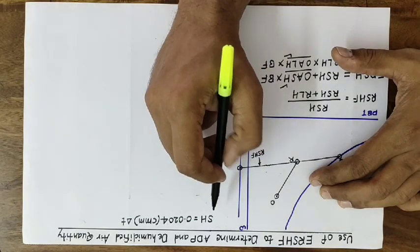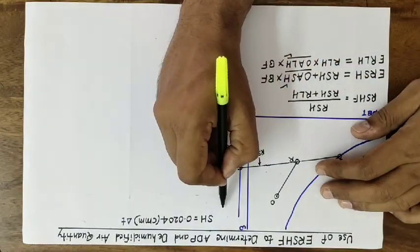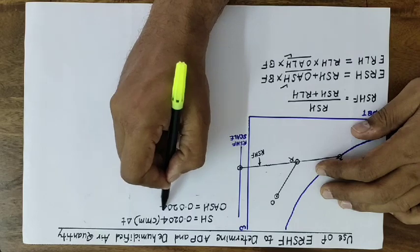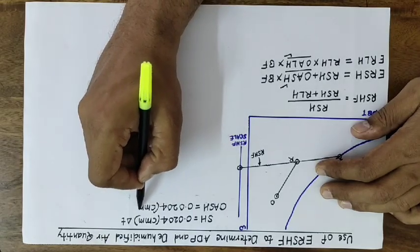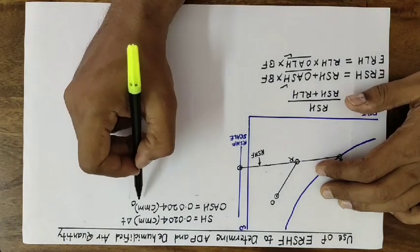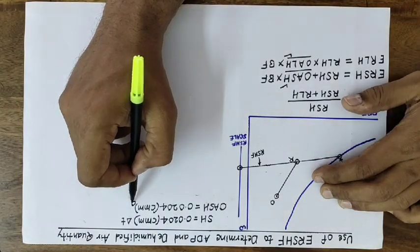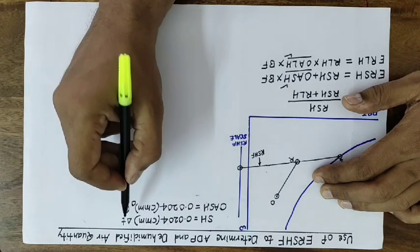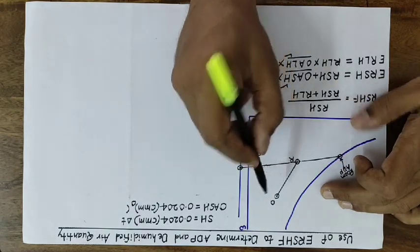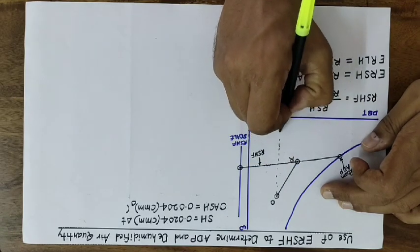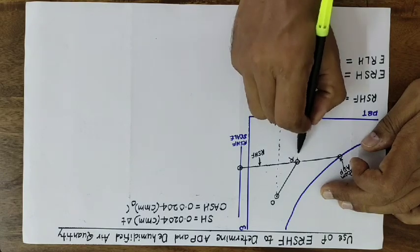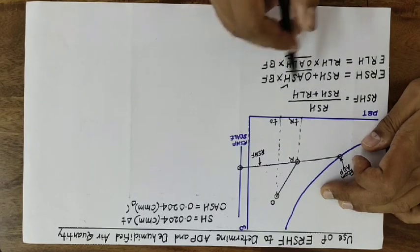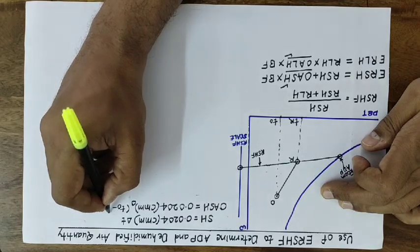The same formula can be used to calculate outside air sensible heat: OASH = 0.0204 × CMM_O × (T_O − T_R), where the suffix O denotes outside air. The outside air volume flow rate must be known. The temperature difference used is T_O minus T_R because the outside air eventually comes to room condition after rejecting heat to the room.